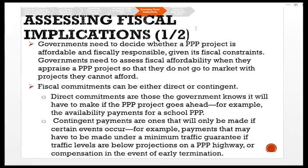Governments need to decide whether a PPP project is affordable and fiscally responsible given their fiscal constraints. They must assess fiscal affordability when approving a PPP project so they do not go to market with projects they cannot afford. Fiscal commitments can be either direct or contingent. Direct commitments are those the government knows it will have to make — for example, availability payments for a school PPP. Contingent payments are made only if certain events occur — for example, payments under a minimum traffic guarantee if traffic levels are below projections, or compensation in the event of early termination.